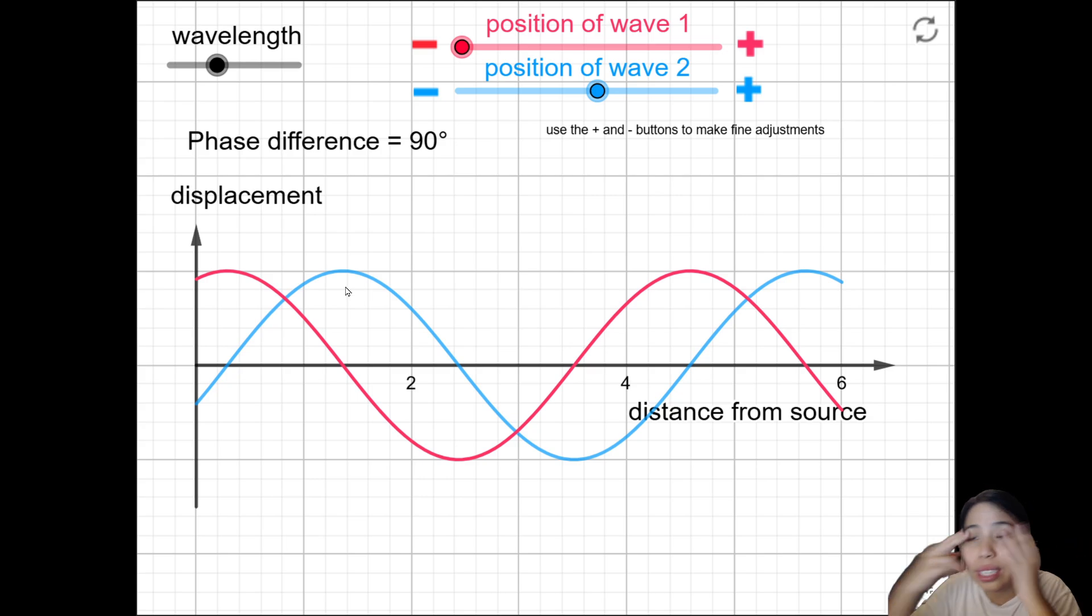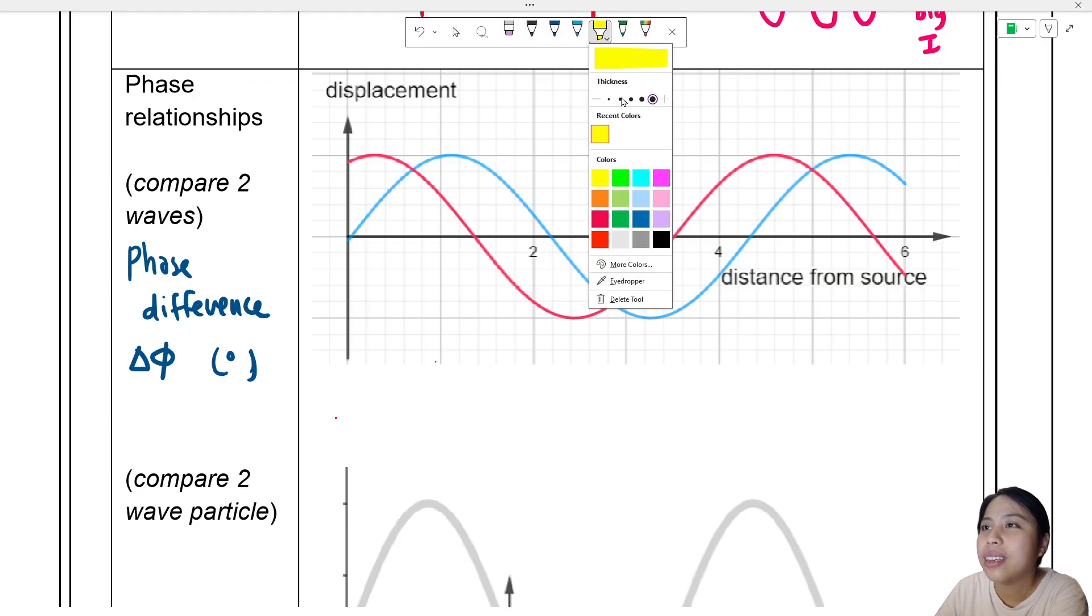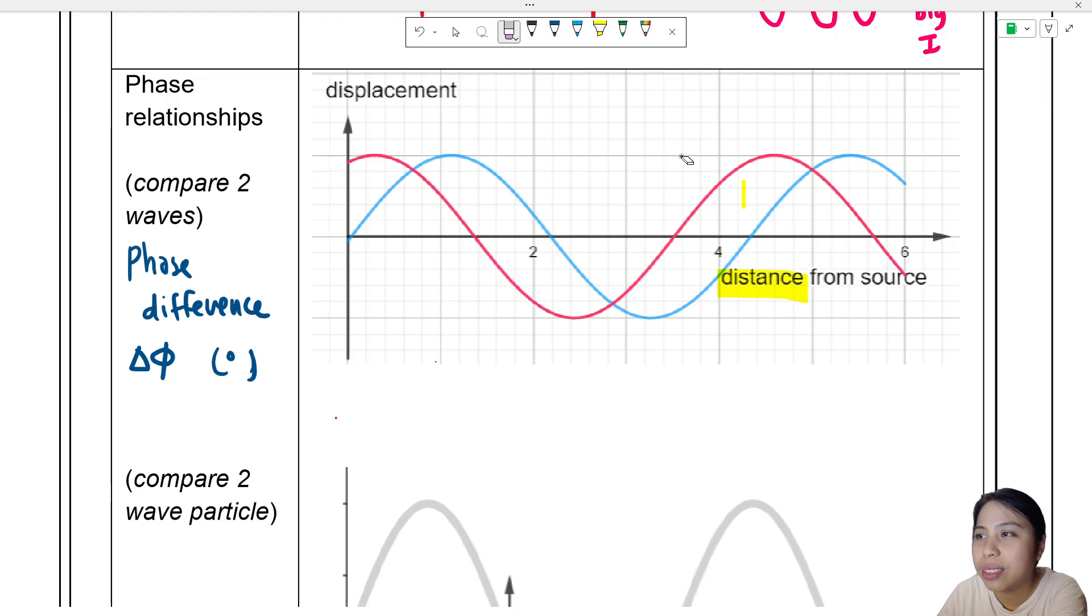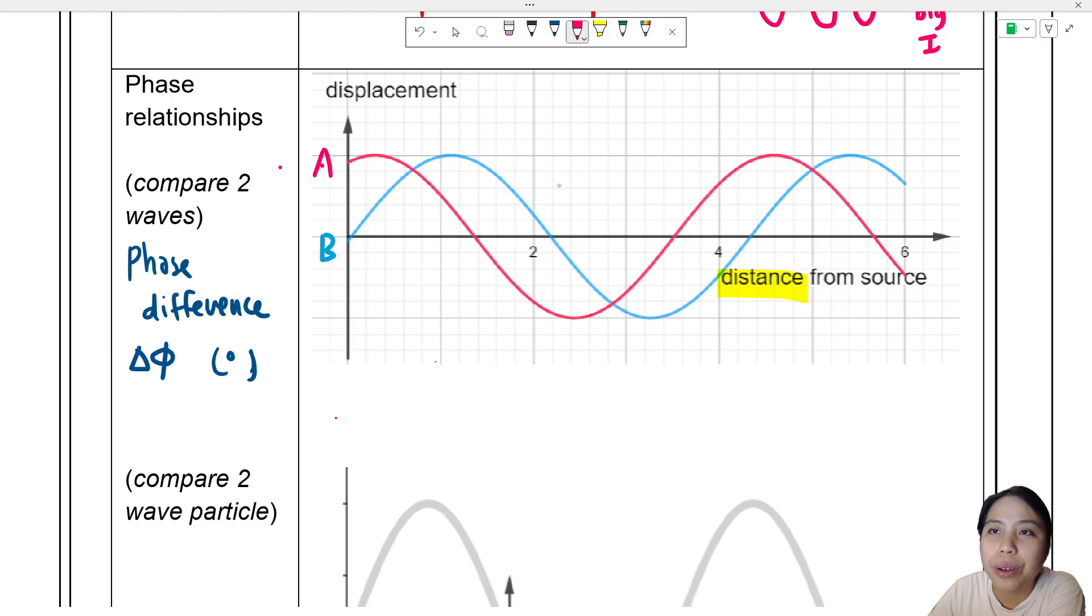So is there an equation for this? Because sometimes we can't just see with our eyes, right? Yes, there is. Stay tuned. To find the phase difference, first let us find what is the lag in terms of whatever this axis is. Now the axis here says distance. Okay, so for wave - let's call this wave B, this blue color one, and the pink color one, let's call this wave A.